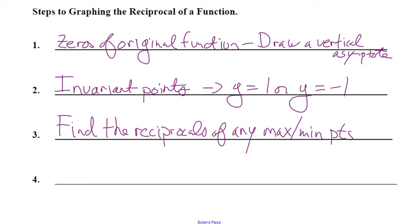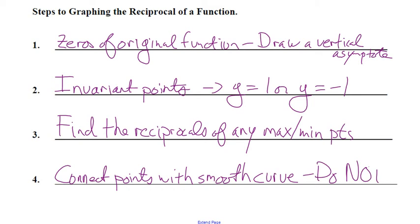Step four: connect the points with a smooth curve. Do not cross the asymptote.